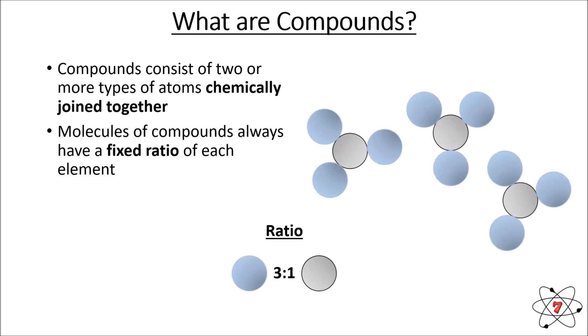Here's another example with two different types of atom. We can see that the blue atoms are in a ratio of three to one with the gray atoms, and this compound will always have that ratio. So whatever compound you have, there is always a fixed ratio of elements within that compound.